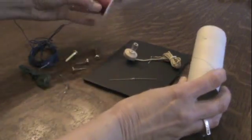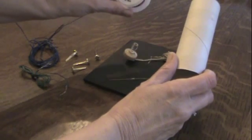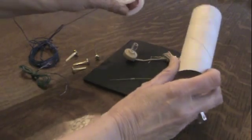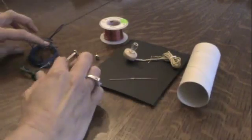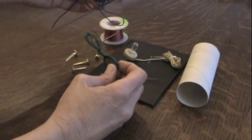A germanium diode that turns on at a much lower voltage than a silicon diode. We're going to wind a coil around a toilet paper roll using 26 gauge insulated copper wire.